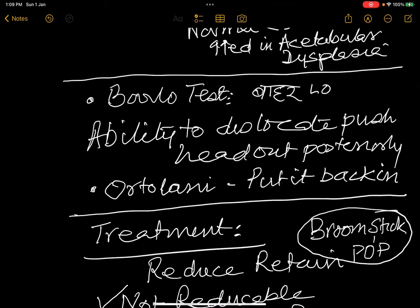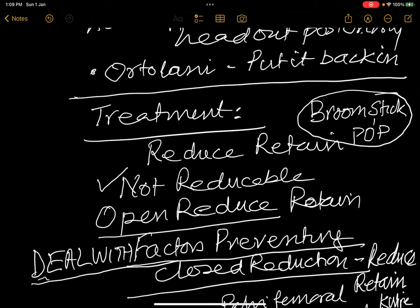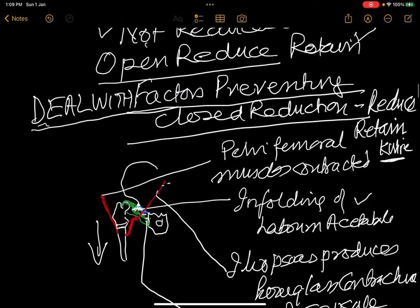Barlow test is the ability to dislocate and pull the head outwards posteriorly in a flexed hip. Ortolani test is to put it back in by pressure on the gluteal region. Treatment is to reduce and retain by a broomstick plaster. If it is not reducible, you have to open reduce and retain it with a K-wire.